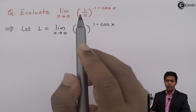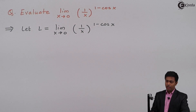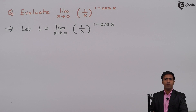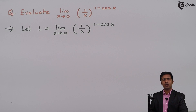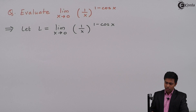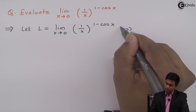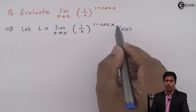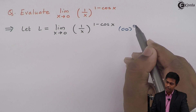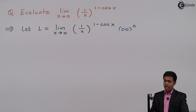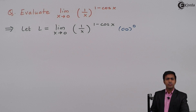First, we will substitute x tends to 0 and check whether we get an indeterminate form or a finite value. If we substitute x as 0, we get 1 upon 0, that is infinity, and cos(0) is 1, so 1 minus 1 is 0. We are getting the form infinity raised to 0, which is an indeterminate form. So we have to use L'Hôpital's rule to get the finite value of the limit.